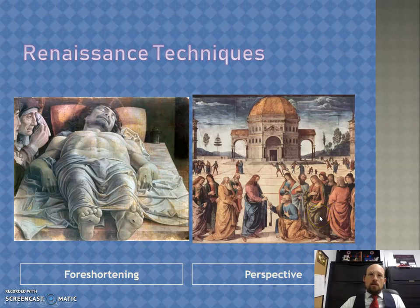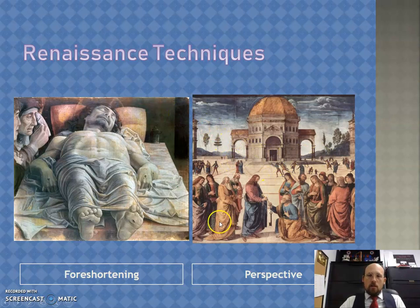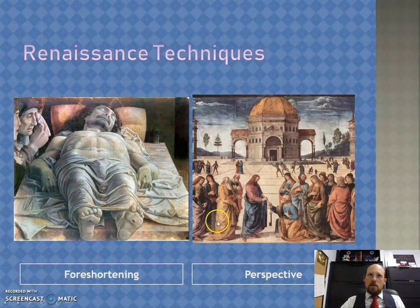Another key technique was linear perspective. This is something a lot of artists nowadays learn, probably even did as a kid in middle school or elementary art classes. The idea is that there's a vanishing point, and all lines meet at that vanishing point and sort of disappear back there. The further you go back, the smaller the figures get. This seems kind of elementary to us today, but this technique was really revived and perfected by many artists during this time. You'll see a lot of early linear perspectives where they use pavers or architecture to give you a single point to really focus on.